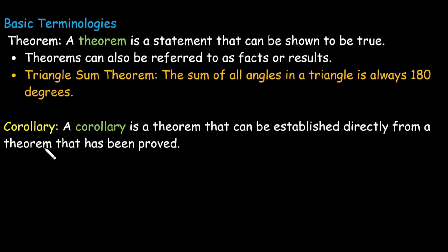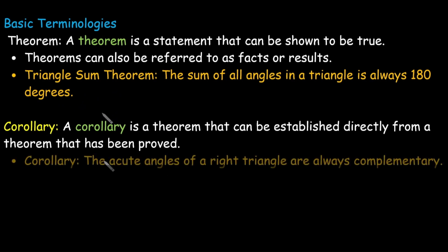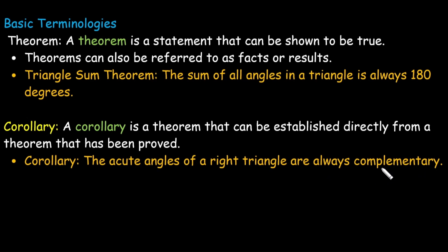The next term is corollary. A corollary is a theorem that can be established directly from a theorem that has already been proved. For example, from the previous case where the sum of all angles in a triangle is 180 degrees, we can derive one more result: the acute angles of a right angle triangle are always complementary.